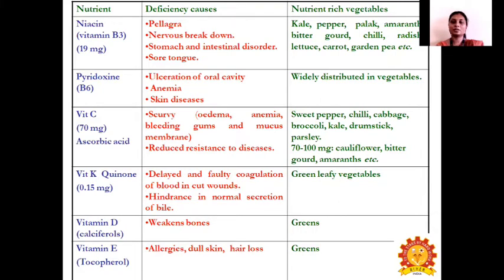Vitamin C is found in sweet pepper, chili, cabbage, broccoli, kale, drumstick, and parsley. Vegetables containing about 70 to 100 mg of vitamin C include cauliflower and amaranthus. Deficiency of vitamin C leads to scurvy, anemia, bleeding gums, and reduced resistance to diseases. Vitamin K, which is rich in green leafy vegetables, deficiency leads to delayed blood coagulation and hindrance in normal circulation of bile.